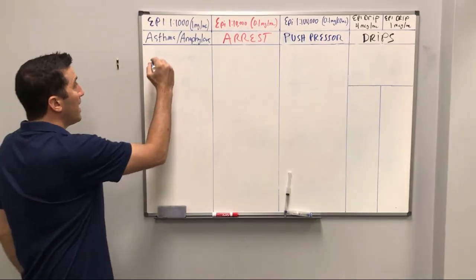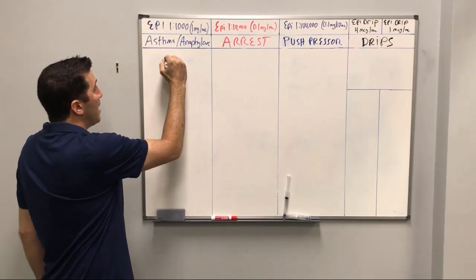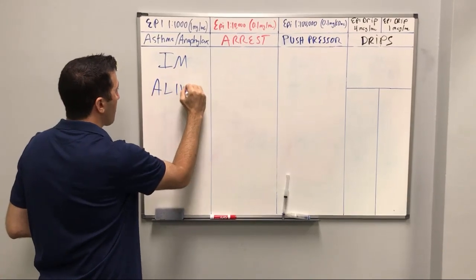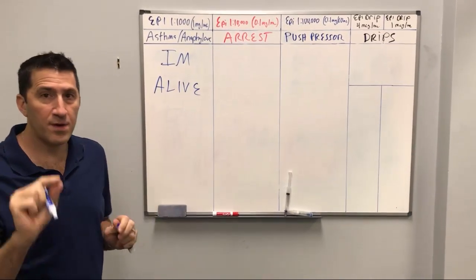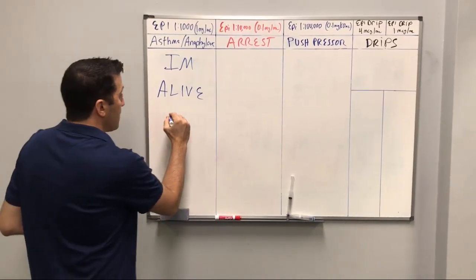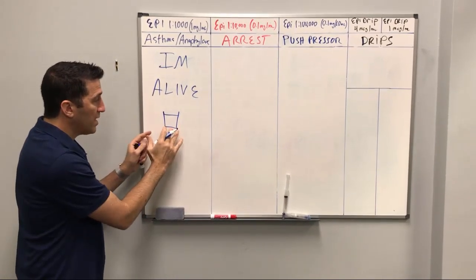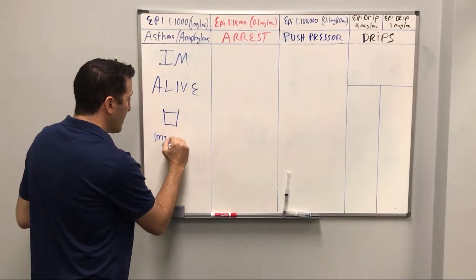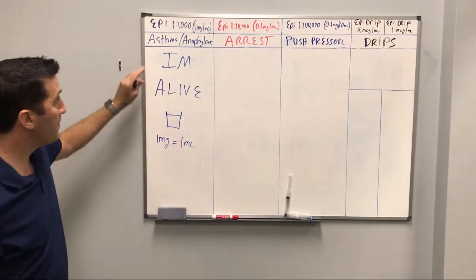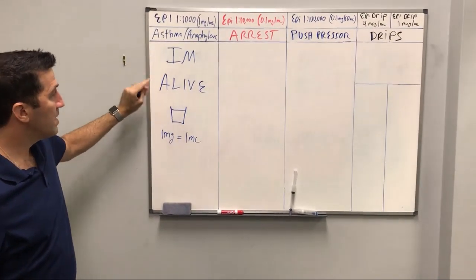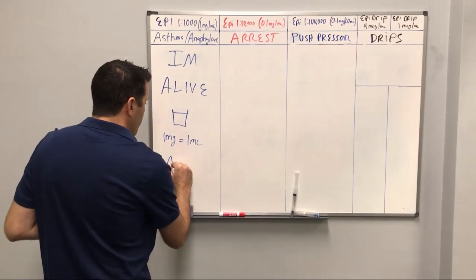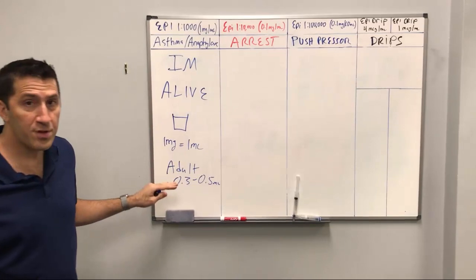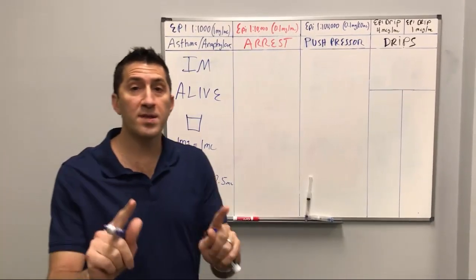Let's start with epi 1 to 1,000. We know that you're going to be using this for asthma and anaphylaxis and you're going to be giving it IM — IM lateral thigh — and of course these people are alive. Think of epi 1 to 1,000 as very concentrated. That's why you have to give it in the muscle. Think of it like a shot of tequila — tequila is pure alcohol, epi 1 to 1,000 is pure epinephrine, and that's important because every milligram equals one amount. For epi 1 to 1,000, you're giving a very small amount to alive people intramuscular. The adult dose is 0.3 to 0.5 ml, and the pediatric dose is going to be less than that. You'll never be using anything but a one cc syringe.